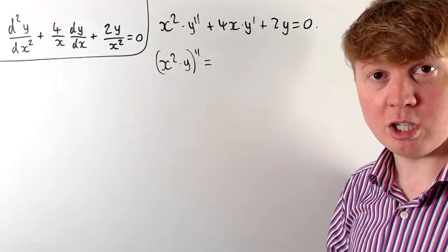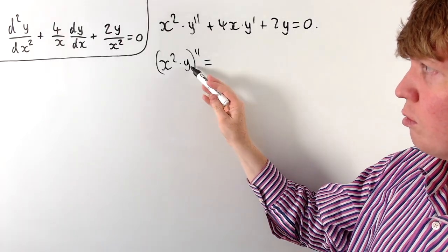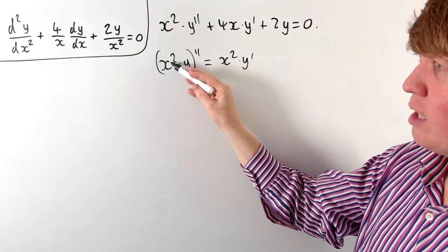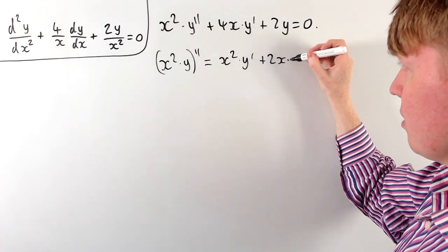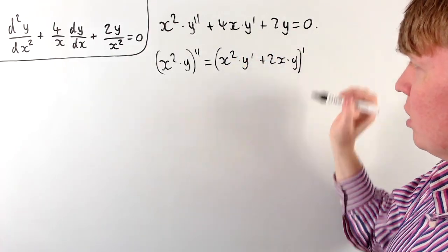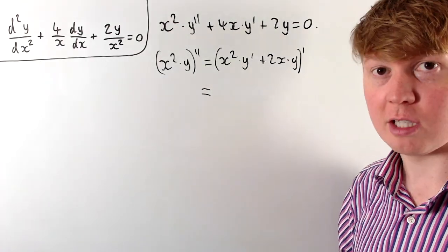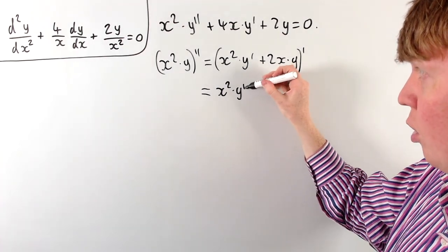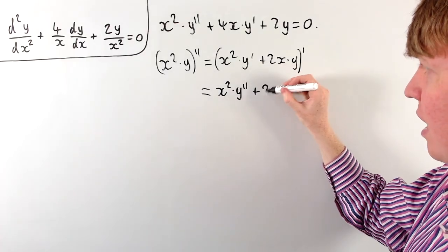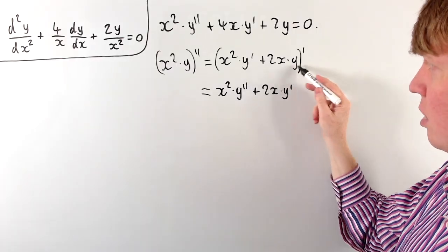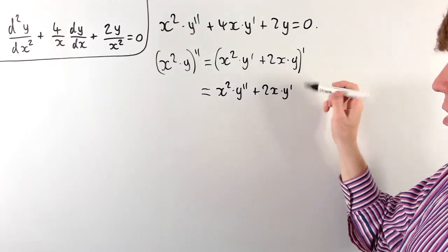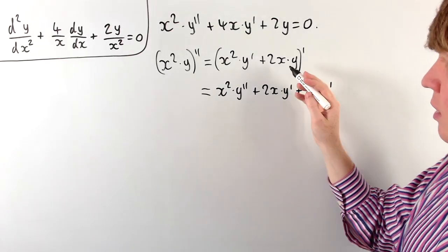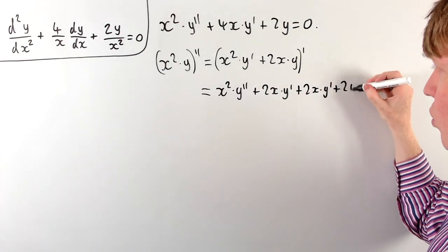Differentiating x squared times y once using the product rule: the derivative of y gives y prime times x squared, so we get x squared times y prime, and differentiating x squared gives 2x times y. Now we differentiate again to get the second derivative. Differentiating the first pair gives x squared times y double prime, plus 2xy prime. Differentiating the second term gives another 2x times y prime and plus 2 times y.